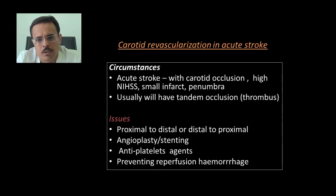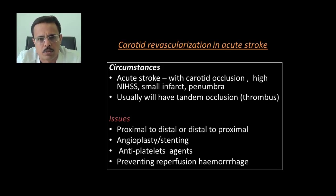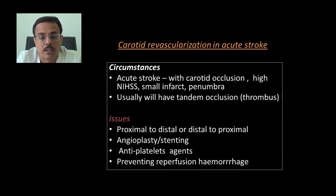We now come to carotid revascularization in the setting of acute stroke with mechanical recanalization. When do we do it? In patients with acute stroke and carotid occlusion with a high NIHSS score, small infarction, and presence of penumbra — these are the settings for revascularization. These patients have tandem occlusion: proximal atherosclerotic stenosis or occlusion, and a distal embolus in the brain circulation. Key questions include: proximal-to-distal or distal-to-proximal recanalization, angioplasty versus stenting, and how to use antiplatelet agents to prevent reperfusion hemorrhage.